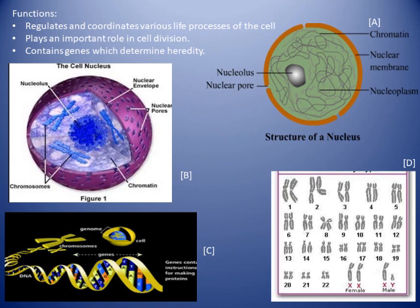Prokaryotic cells ('pro' = primitive, 'karyon' = nucleus) have a nuclear material not bounded by a nuclear membrane — the nucleus-like region is called the nucleoid. Example: bacteria. In eukaryotic cells ('eu' = true, 'karyon' = nucleus), the nucleus is bounded by a nuclear membrane. All organisms other than bacteria are eukaryotic.